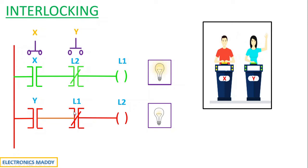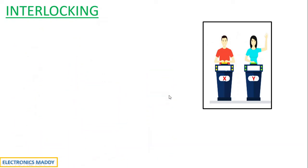Now even if Y knows the answer and tries to press the push-button switch, Y's contact gets energized, but the normally closed contact of L1 is acting as an open circuit and will not allow current to flow through that path, so light L2 will never glow in this case.